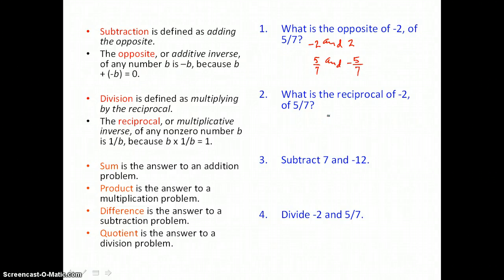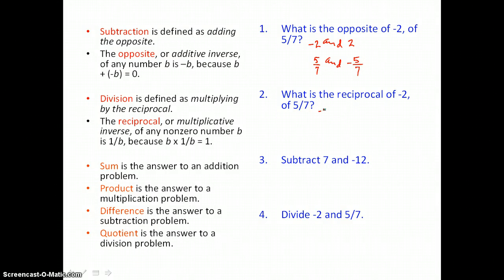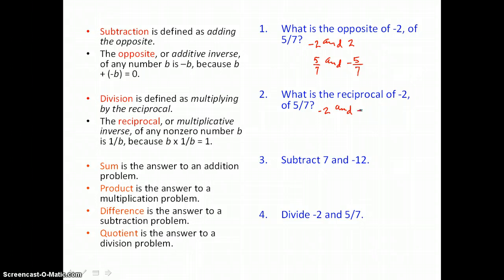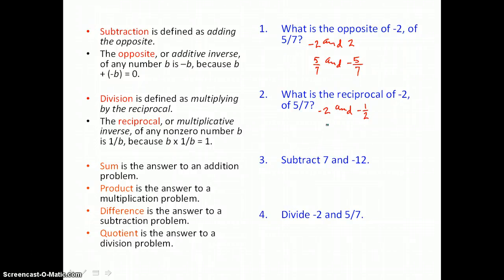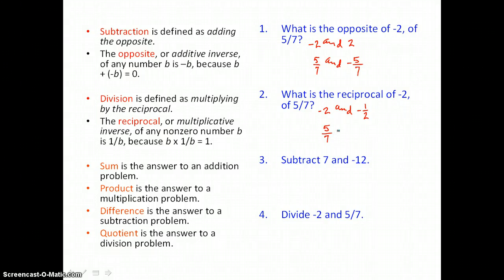Problem 2: what is the reciprocal of negative 2 and of 5 sevenths? The reciprocal of negative 2 — since negative 2 can be written as negative 2 over 1 — is 1 over negative 2, or negative one-half. If you multiply negative 2 times negative one-half, you get positive 1. The reciprocal of 5 sevenths is 7 fifths, and multiplying those reciprocals together gives positive 1.